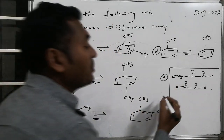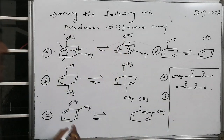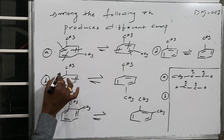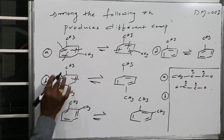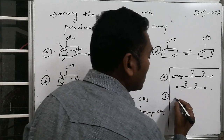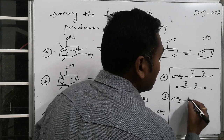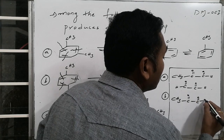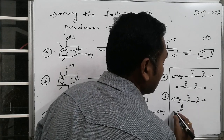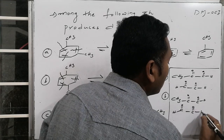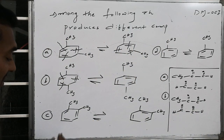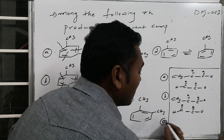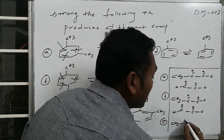For compound B (para-dimethylbenzene), ozonolysis cleavage gives the same two compounds — methylglyoxal and glyoxal — repeated from both Kekulé structure cleavages.